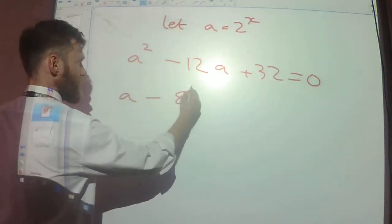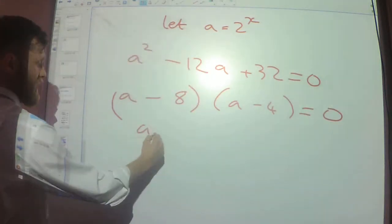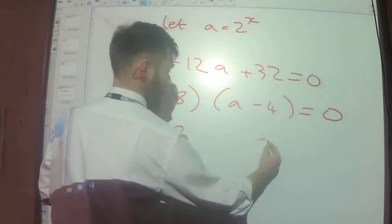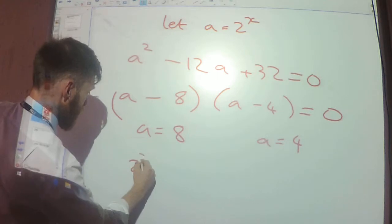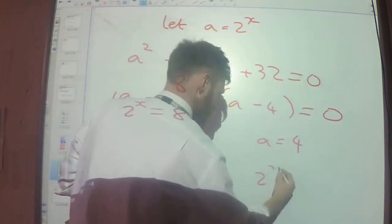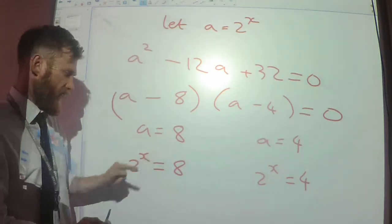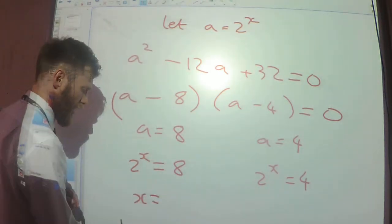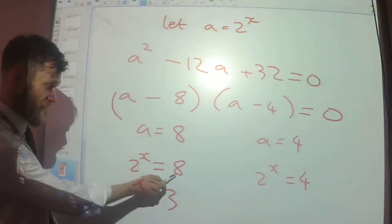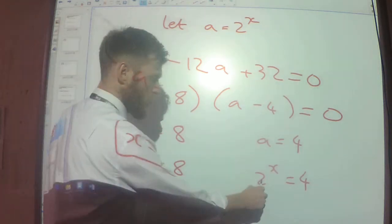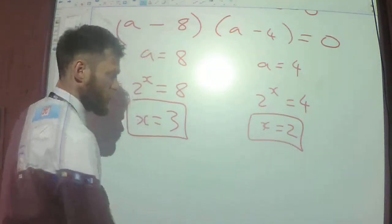Factorising, so a equals 8 or a equals 4. So that means 2 to the power of x equals 8, or 2 to the power of x equals 4. So 2 to the power of something is 8 — that something would be 3, because 2 cubed is 8, so x equals 3. Or 2 squared is 4, so x equals 2.